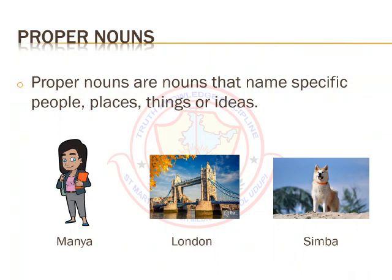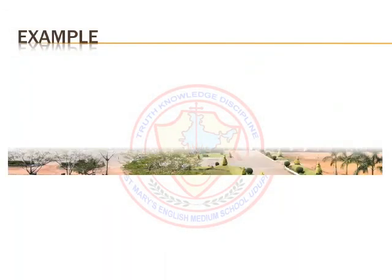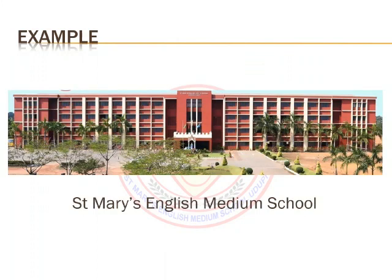Since these nouns are naming specific things, they always begin with a capital letter. Sometimes they contain two or more important words. If this is the case, all words are capitalized, and the whole thing is still considered one noun, even though it's made up of more than one word — such as the name of a school. Example: St. Mary's English Medium School. It is the name of only one school.